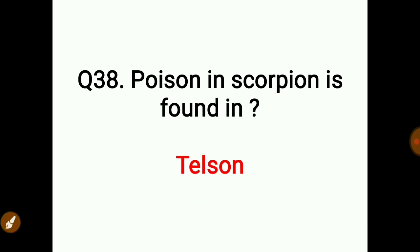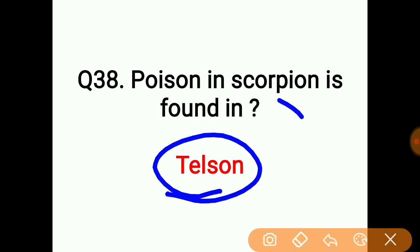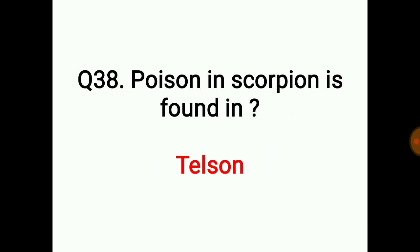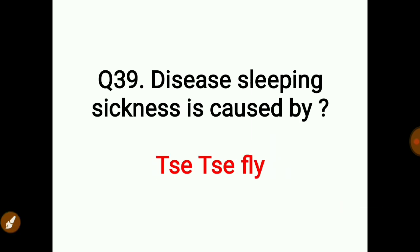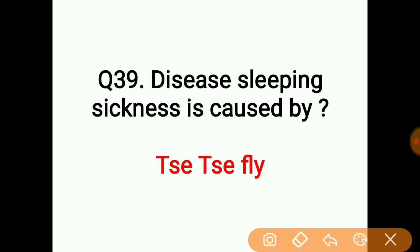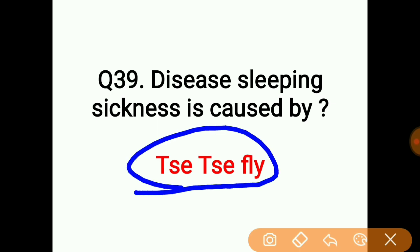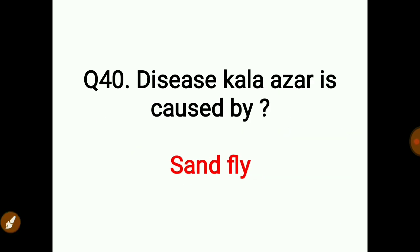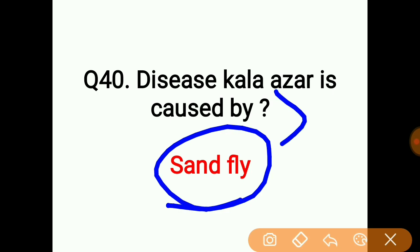The poison of a scorpion is found in its telson. Sleeping sickness is caused by the tsetse fly. Kala-azar (leishmaniasis) is caused by the sandfly.